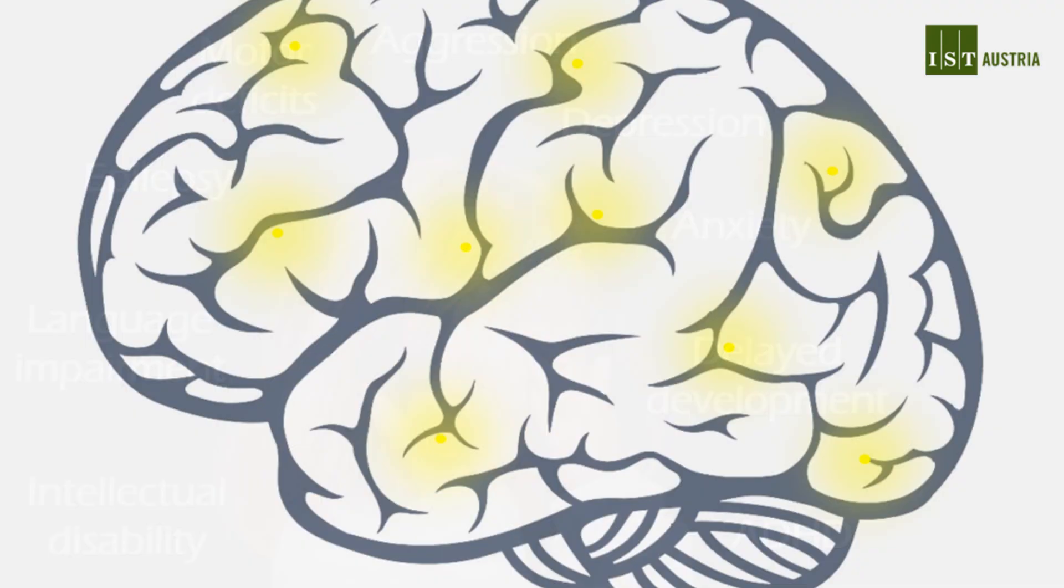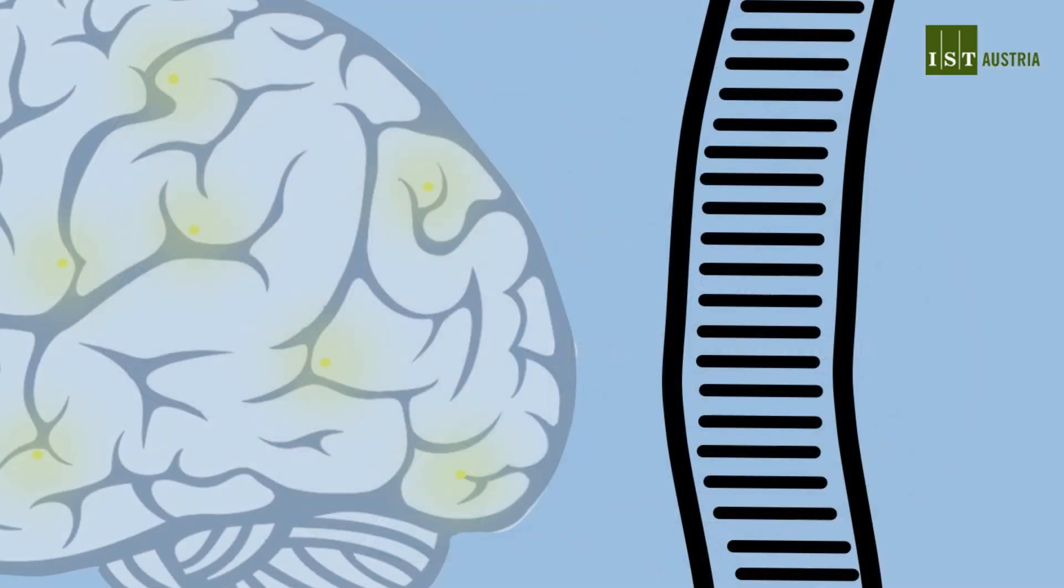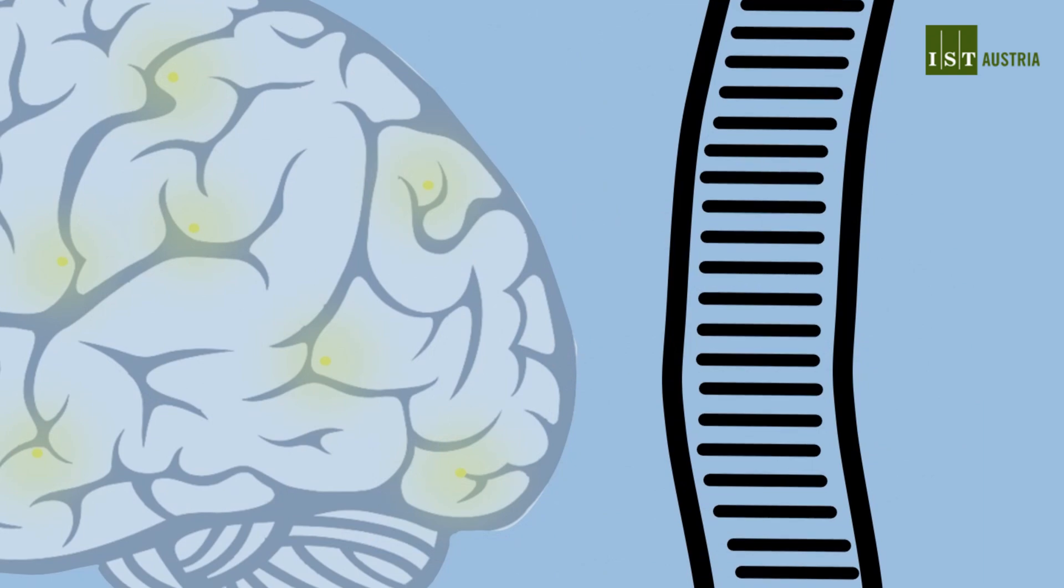Those symptoms are due to malfunctions of the nervous system caused mostly by genetic mutations. The list of mutated genes associated with ASD is long.